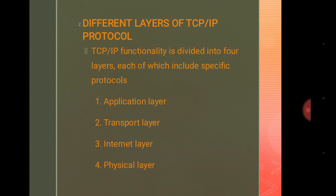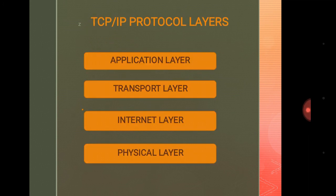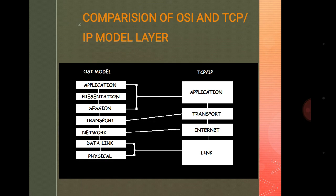The TCP/IP functionality is divided into four layers, each of which includes specific protocols: the Application Layer, Transport Layer, Internet Layer, and Physical Layer. These are the four layers of the TCP/IP protocol model.